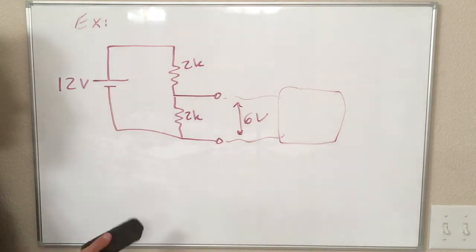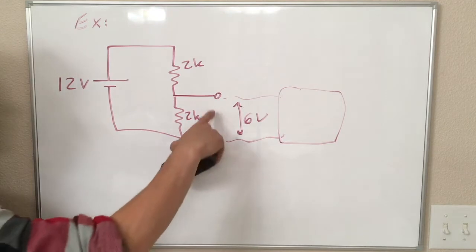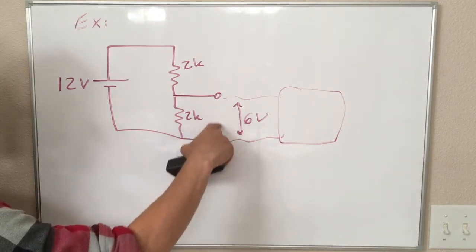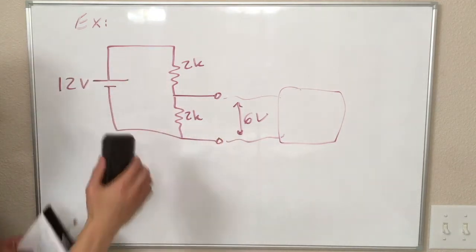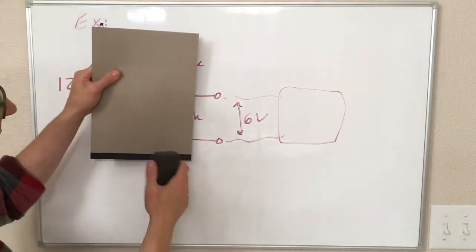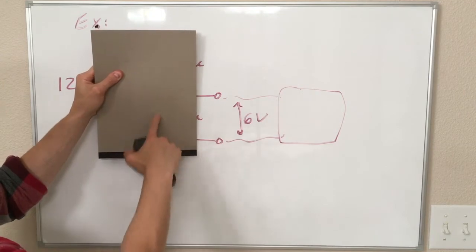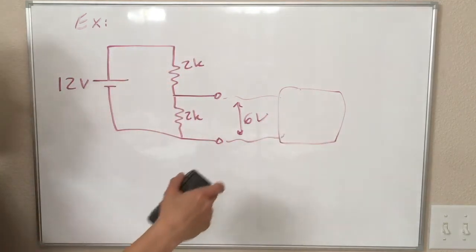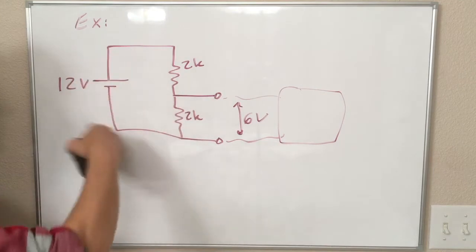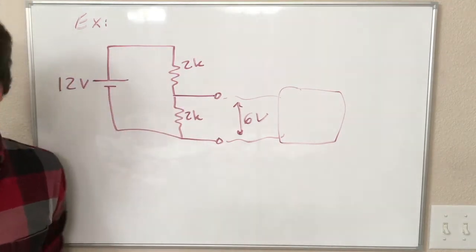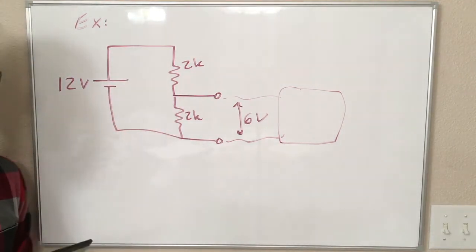So this doesn't prove the equivalence, this just shows we can get 6 volts out of this. But my claim is that this circuit, when connected between these two points, this circuit over here can be totally replaced by a single voltage source and a single resistor in series, and anything we measure over here is going to be the same, whether it's this whole circuit or that single voltage source. So I'm not going to prove this. I'm just going to do an example that hopefully convinces you that this is true.